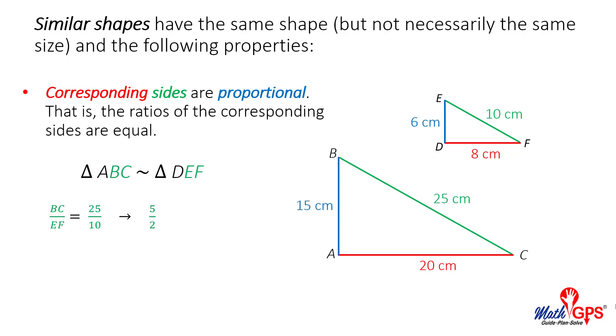Now consider side BC of the larger triangle and corresponding side EF of the smaller triangle. The similarity statement shows the line segment endpoints in the same positions as shown in green. The side lengths can be written as the ratio 25 over 10. If we simplify the ratio, it is renamed 5 over 2.